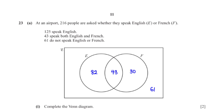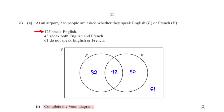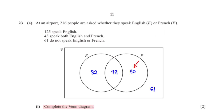At an airport, 216 people are asked whether they speak English or French. Complete the Venn diagram. 61 people speak neither, so we put 61 outside sets E and F. 43 speak both, so we put 43 in the intersection. 125 speak English, so subtracting 43 gives 82 who speak English only. To find French only, we subtract the sum of 82, 43, and 61 from 216, which gives 30.